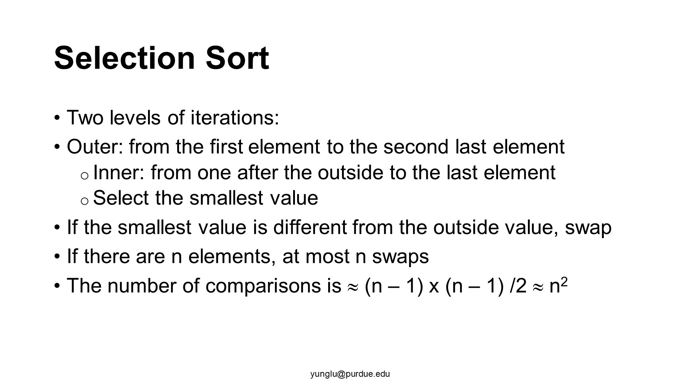If this is the second element, we are selecting the second smallest value of the array. The inner iteration selects the smallest value among the remaining part of the array. This iteration starts from the element after the outer iteration to the end of the array, finds and selects the smallest value.